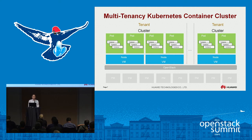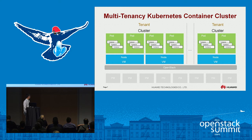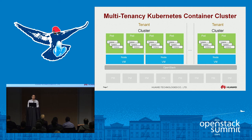If you have N tenants, let's make N Kubernetes clusters. Apparently this has problems — it's not efficient. Every time you bring up a new tenant, you need to provision a separate cluster, which takes time and is against the goal of fast deployment. We want to turn up and turn down containers very fast.